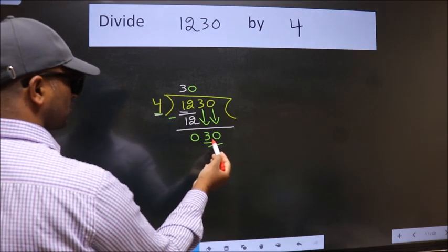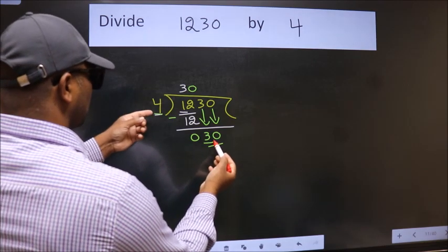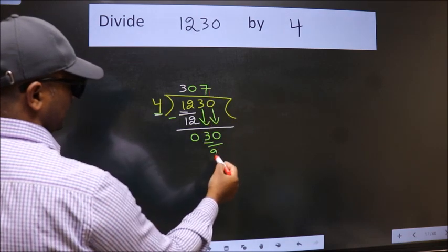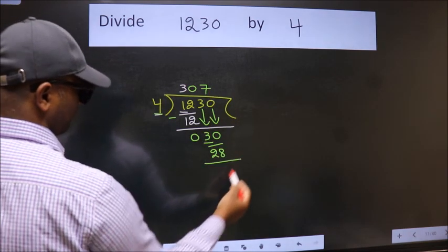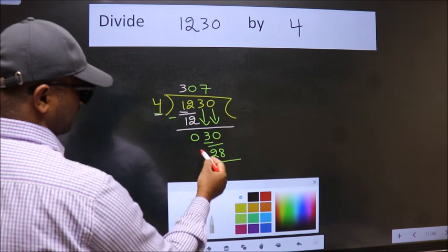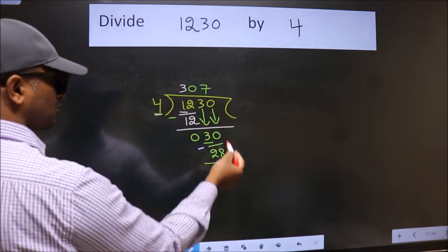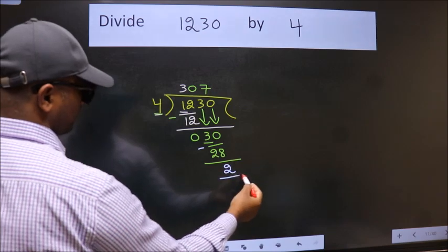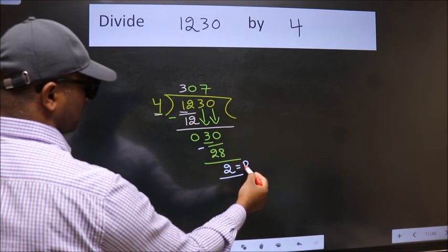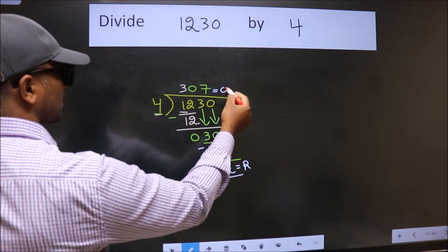A number close to 30 in the 4 table is 4 times 7, 28. Now we subtract. We get 2. No more numbers to bring it down, so we stop here. This is our remainder and this is our quotient.